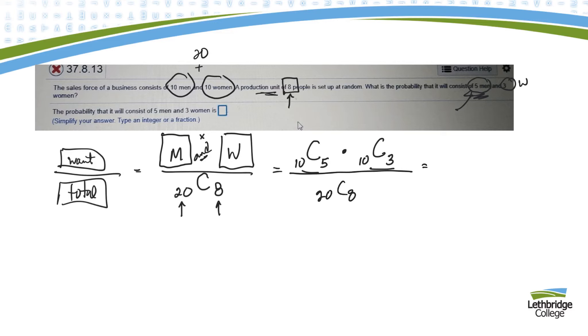So on your calculator, I would do something like this. I would go 20 and then do your NCR button and five. Five times, oh, not 20, sorry. Erase that, not 20. There's 10. So I do 10 NCR button five times 10 NCR button three bracket and then divide, and on the bottom, 20 choose eight, or the NCR button eight. All right, hopefully that helps.